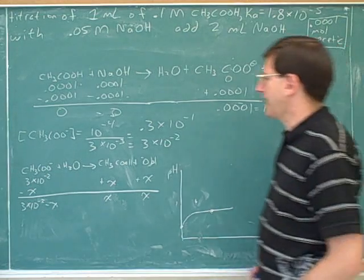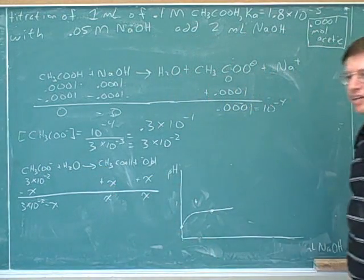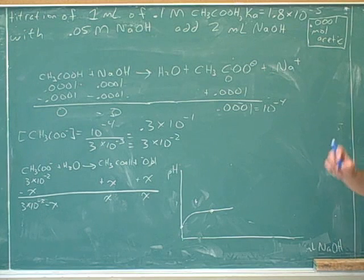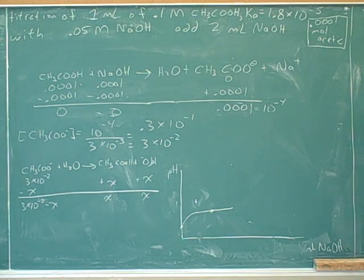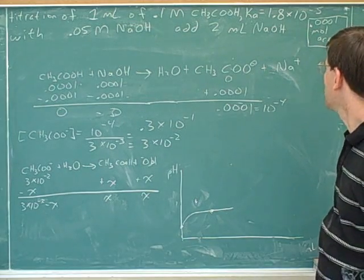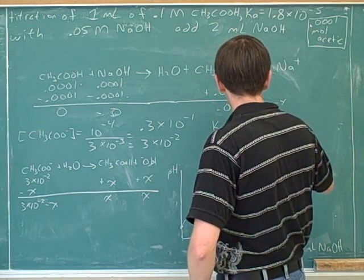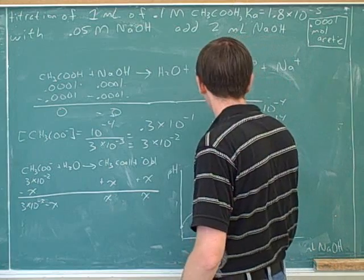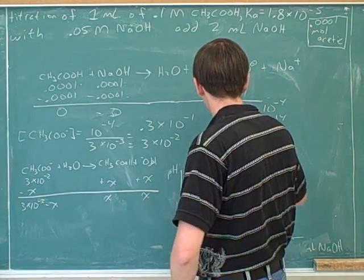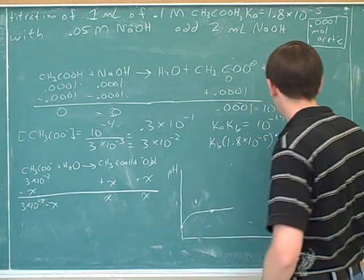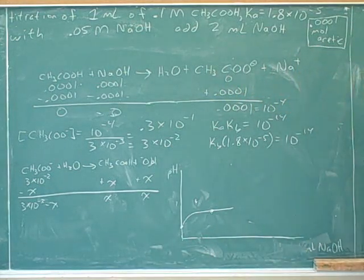Now we have a problem because what's the equilibrium constant for this reaction? I need the KB. Yeah, you need the KB. Well, if you know the KA, how do you find the KB? Subtract from the 10 to the 14? Not subtract. That's how you would find the pKA. What we know is that the KA times the KB is 10 to the negative 14.